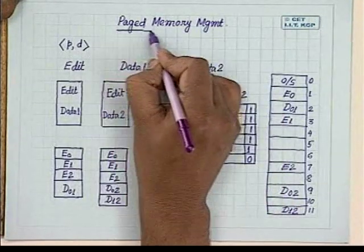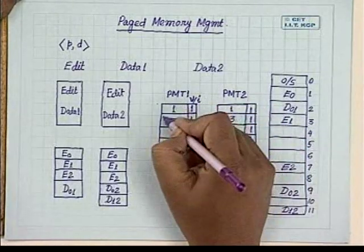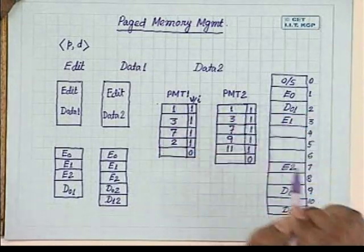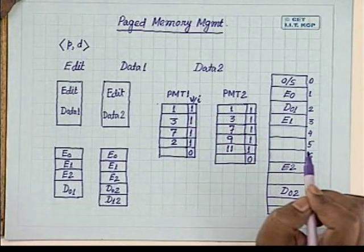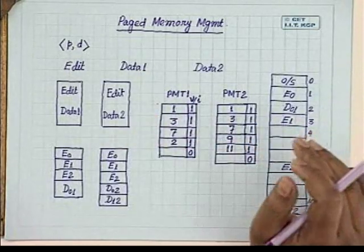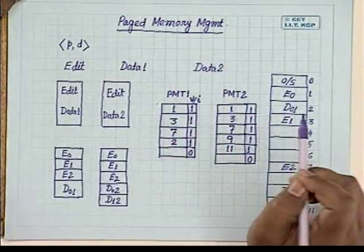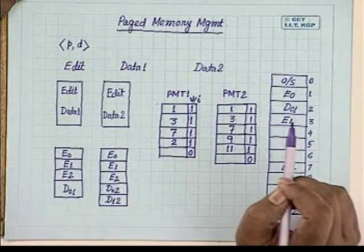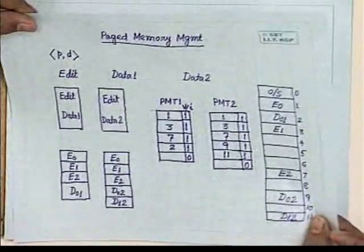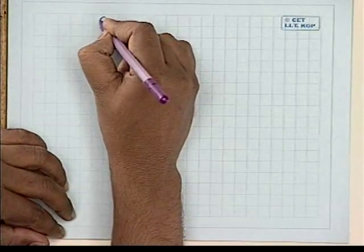Even in paged memory management, we can have a protection mechanism through the valid-invalid bit, and we can also allow sharing of code by properly setting values in the page map table. However, paged memory management does not take care of the modular structure of a program. That modular structure can be handled by a similar technique called segmented memory management.